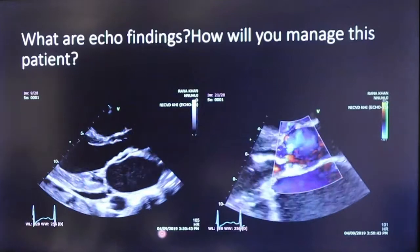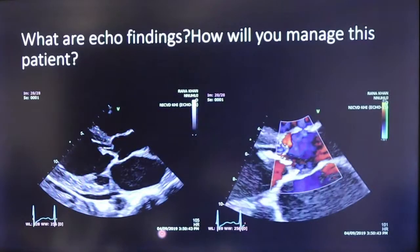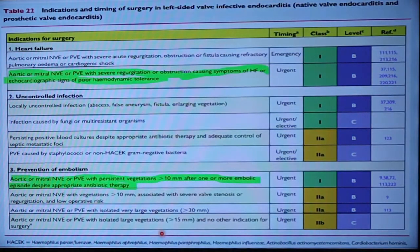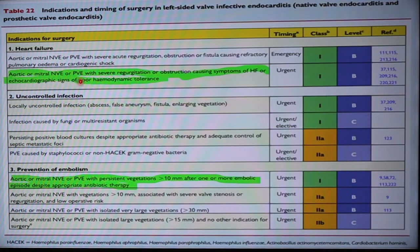The diagnosis is acute infective endocarditis with distortion of the aortic valve and severe aortic regurgitation. Regarding management, along with medical treatment, this patient should be sent for urgent surgery. According to ESC guidelines, the indications for urgent surgery in left-sided infective endocarditis include aortic or mitral native or prosthetic valve endocarditis with severe regurgitation or obstruction causing heart failure symptoms, or signs of hemodynamic compromise.